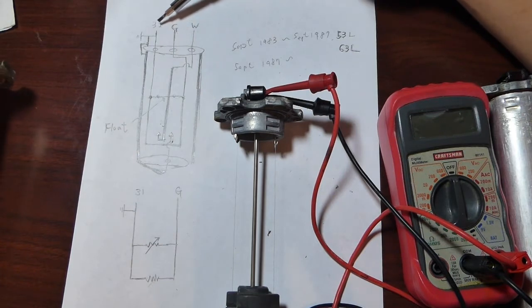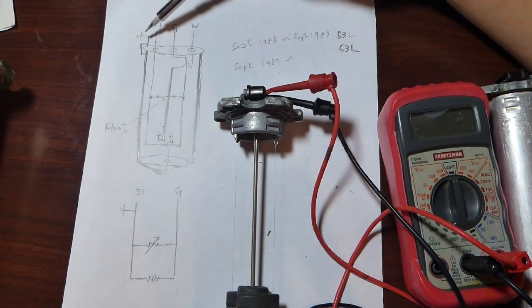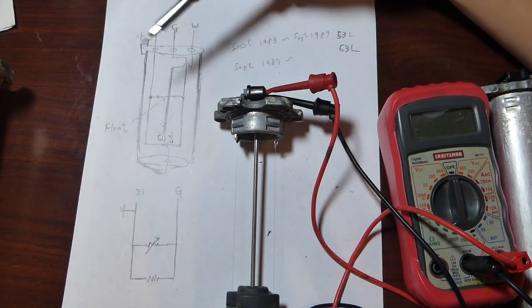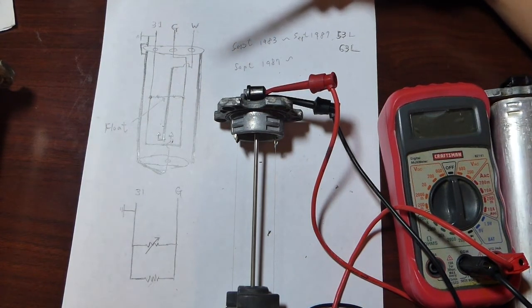Terminal 31 is directly connected to the ground and it also connects to the casing of the fuel level sending unit itself.